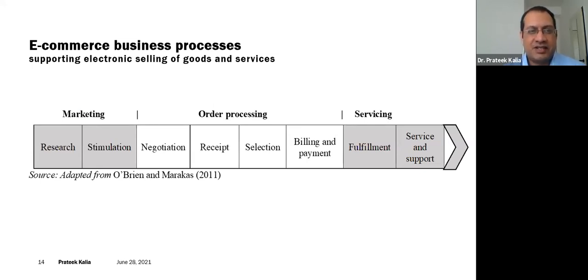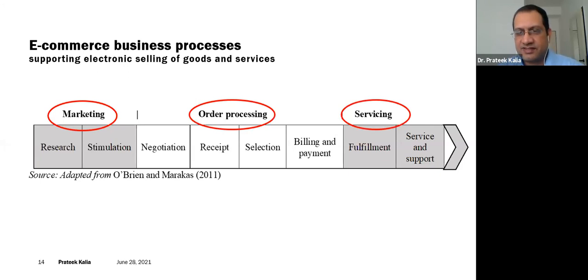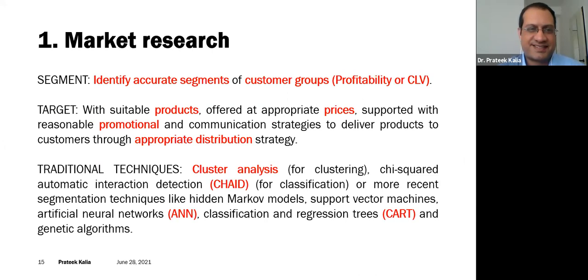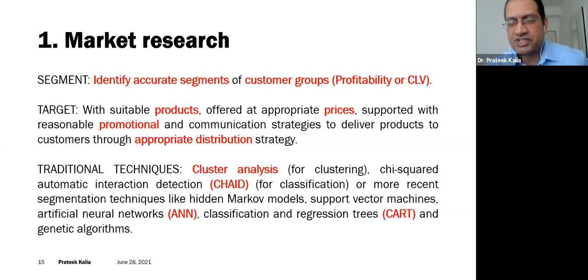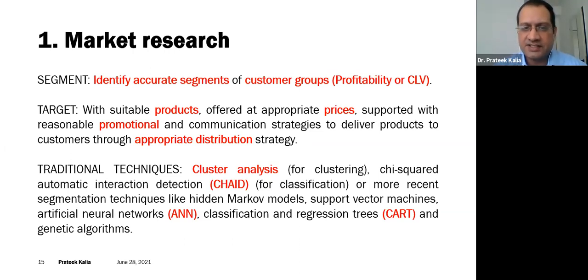Let us see how artificial intelligence is rocking e-commerce business. I have divided e-commerce business processes into three main areas: marketing, order processing, and servicing, with further sub-processes. The first is market research. Typically we talk about STP — segment, target, and position. With the help of AI, we can identify accurate customer segments that are profitable, and we can position the right product at the right price, in the right place, with the right promotional and distribution strategy.